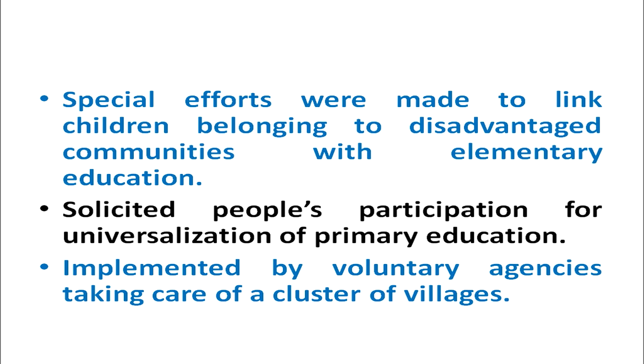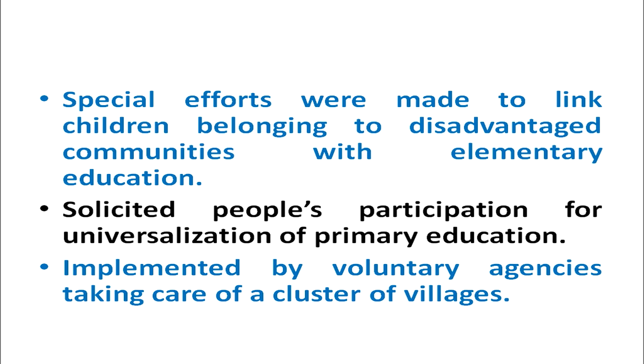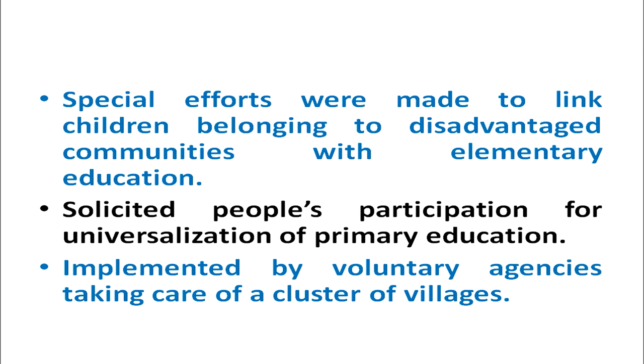Special efforts in this project were made to link children belonging to disadvantaged communities with elementary education. This project had a main stress on linking elementary education with the development of children belonging to disadvantaged communities in Rajasthan. People's participation for universal primary education was solicited and maximum community participation was ensured. This project was implemented with the help of voluntary agencies and NGOs, who were entrusted the responsibility of a cluster of villages to implement Lok Jumbesh.